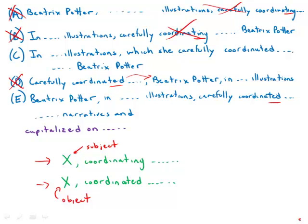And so e has illustrations carefully coordinated. That works. C actually is the only one which doesn't have a participial construction. It actually has a full verb which she carefully coordinated. That is also correct.